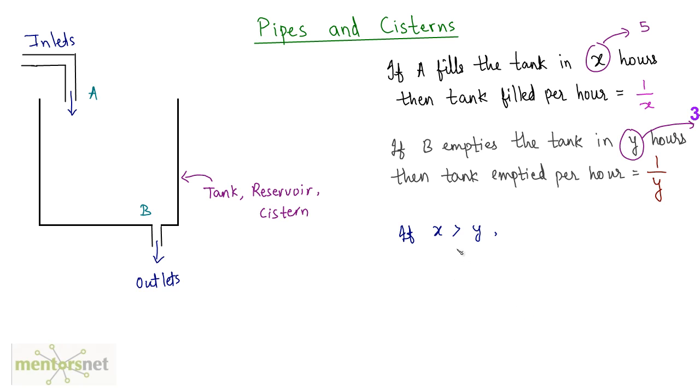So in such a situation when the time taken to fill is more than the time taken to empty, then the tank is emptied. So tank emptied per hour will be equal to the fraction of tank emptied by B minus the fraction of tank by A in 1 hour. So that's one formula right there.